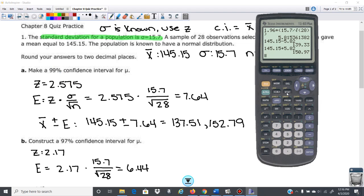So you're going to hit this button here. This is stat, and you're going to go over to tests. So scroll over to test, and you're not doing a Z test. You're doing a Z interval, because we're doing a confidence interval. So you're going to hit enter on Z interval.